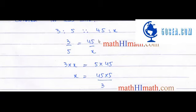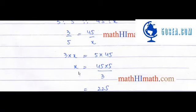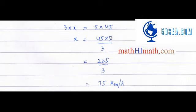So x is equal to 45 multiplied by 5. Here 3 is being multiplied with x, so when it comes to the other side it will be divided, so it will come in the denominator. So here we get 225 divided by 3.